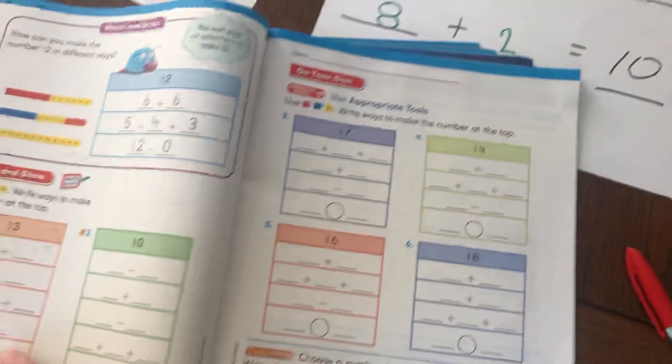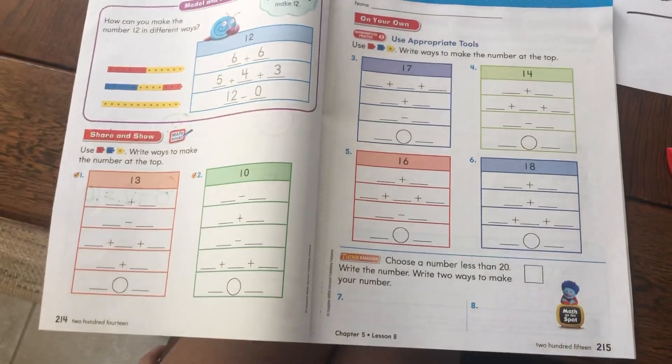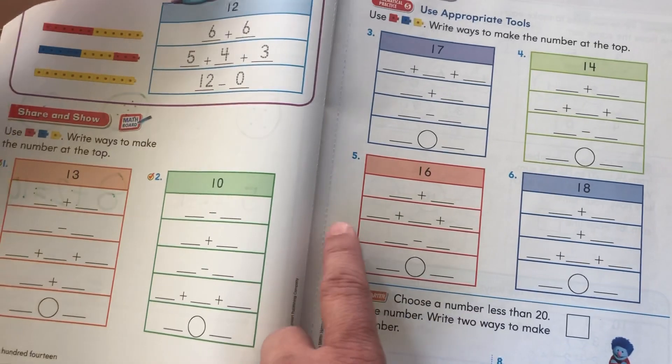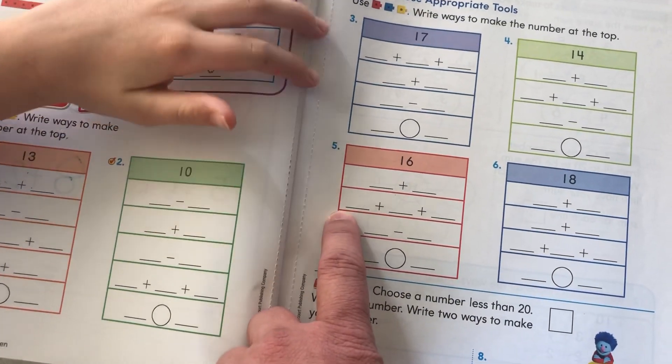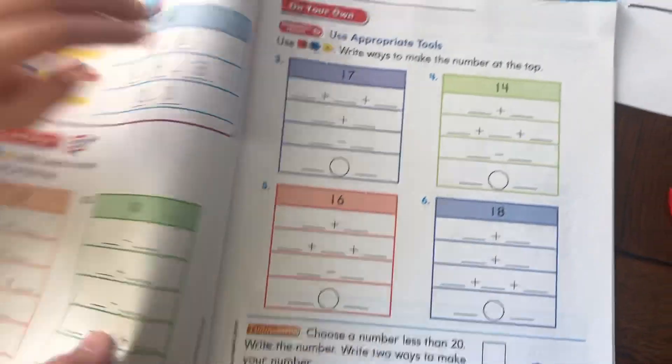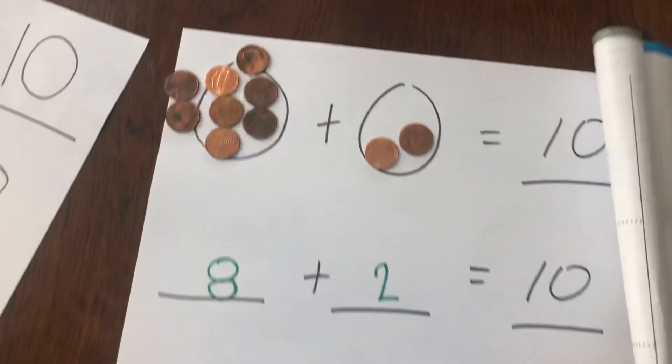So if we open up the lesson and look at the lesson, we're going to see that they're going to give you numbers. And you're going to have to write different ways to make those numbers with addition and subtraction.